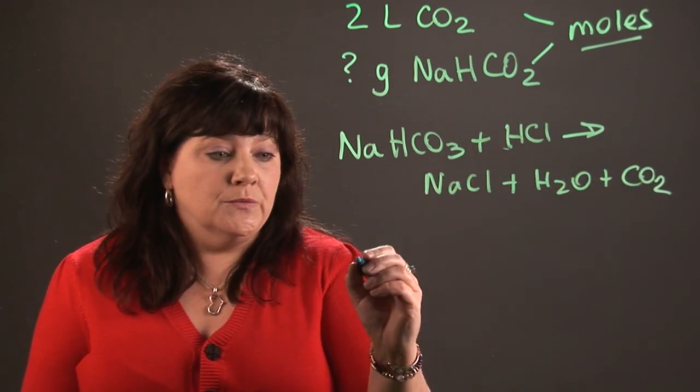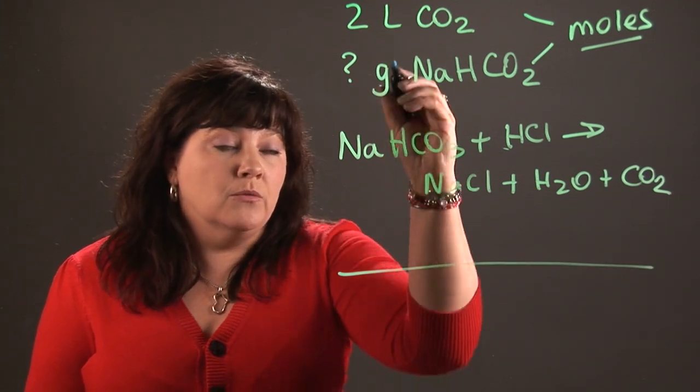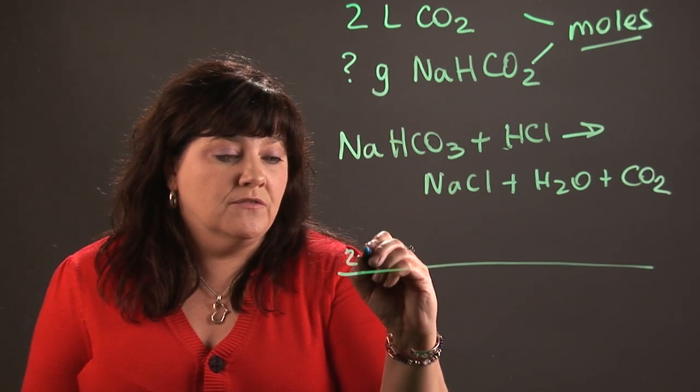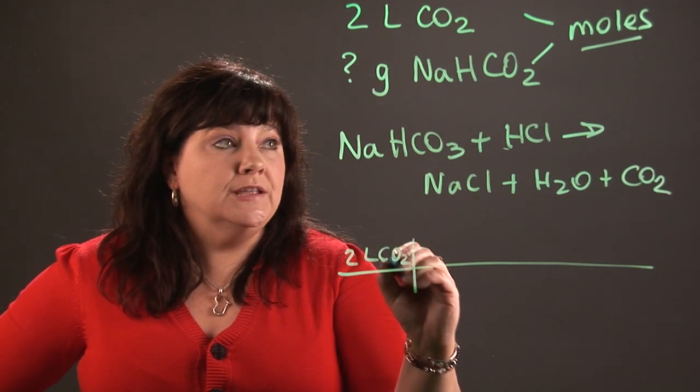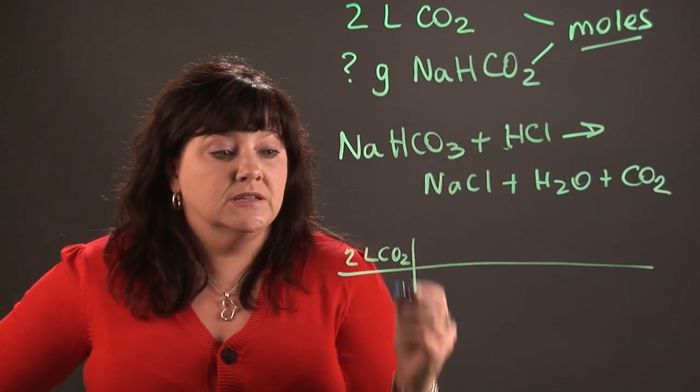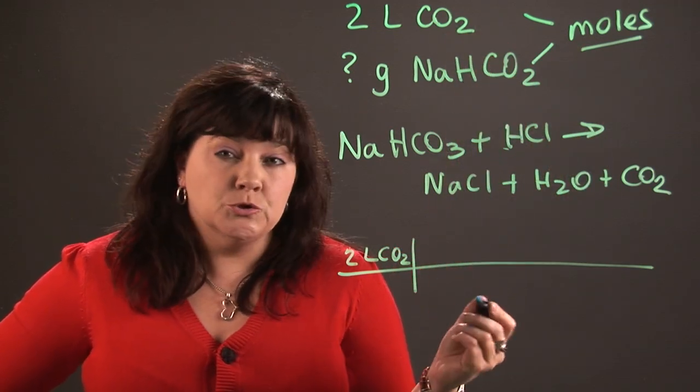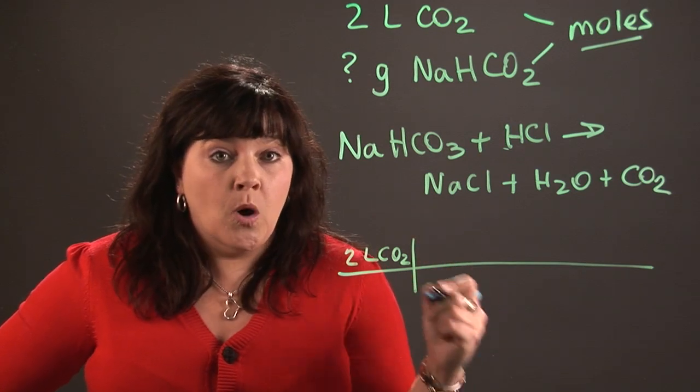So here's what we do. We set up what we call a factor label problem, and we start with what we're given. And what we're given is two liters of carbon dioxide. Now, when you want to convert from liters to moles, because remember, I'm going to have to go to moles to compare this substance to this, we use a conversion that's 22.4. So there's 22.4 liters in one mole.